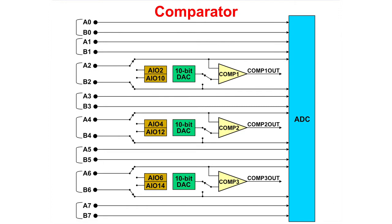This device has three analog comparators that share the input pins with the analog to digital converter module. If neither the ADC or comparator input pins are needed, the input pins can be used as analog I/O pins. One of the inputs to the comparator comes directly from the input pin and the other input can be taken from the input pin or the 10-bit digital to analog converter. The output of the comparator is fed into the EPWM Digital Compare submodule.